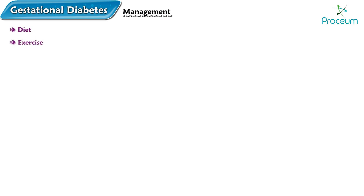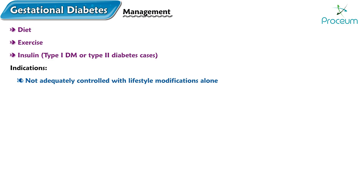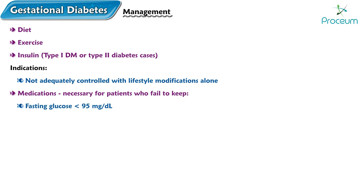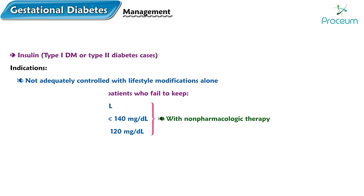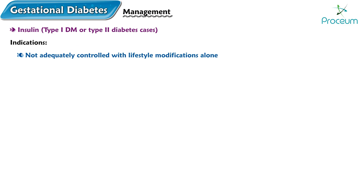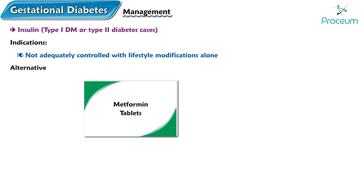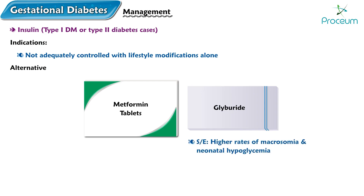Treatment of diabetes mellitus in pregnancy primarily involves diet and exercise. However, insulin may be required in cases of type 1 diabetes mellitus or type 2 diabetes not adequately controlled with lifestyle modifications alone. Medications may be necessary for patients who fail to keep their fasting glucose below 95 mg/dL and one-hour postprandial glucose below 140 mg/dL or two-hour postprandial levels below 120 mg/dL with non-pharmacologic therapy. Insulin is the first-line agent for patients with gestational diabetes who do not achieve sufficient glycemic control with nutritional therapy and exercise. Metformin and glyburide are valid alternatives if insulin therapy is not possible; however, glyburide may have higher rates of macrosomia and neonatal hypoglycemia.